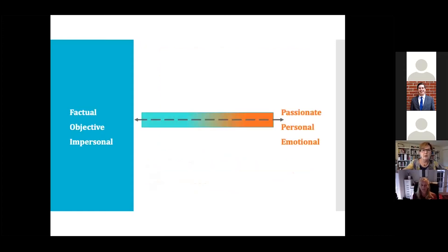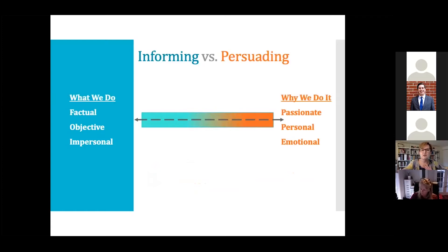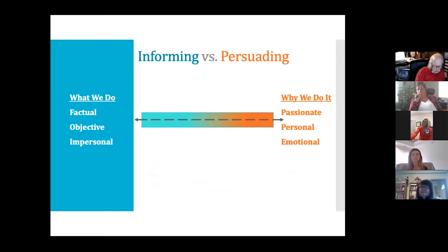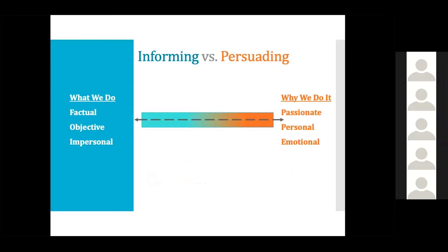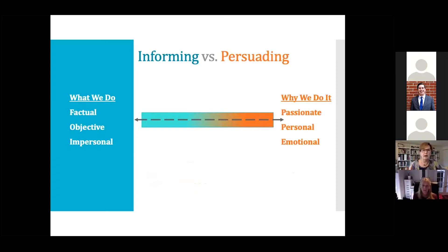The next topic is the informing versus persuading continuum, which I use in all of my presentation skills training. When we inform, it's usually about what we do — it's factual. I'm a chiropractor, I see this kind of patient. All of these things are informative and objective. We might not be super excited about those facts. However, what we generally get more excited about is why we do what we do.